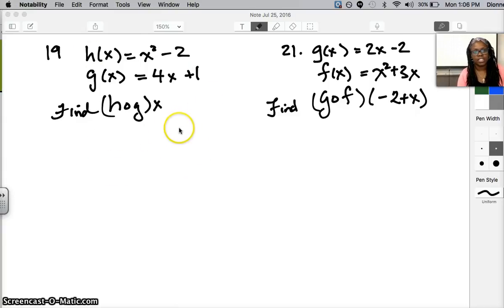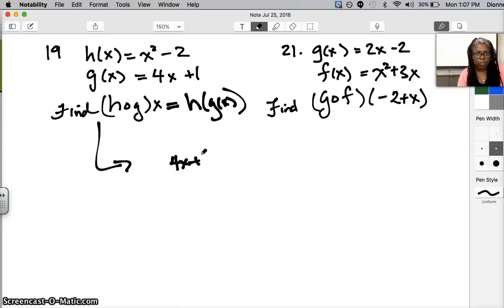Number 19 is pretty much this, I hope I wrote it correctly. Basically we remember that when we see h of g of x, we could also think of it as h(g(x)). That means taking the g(x) function and placing it into the h(x) function. So h(g(x)) would be equal to (4x + 1)² - 2. Notice that I took the g(x) function and put it into the h(x) function.